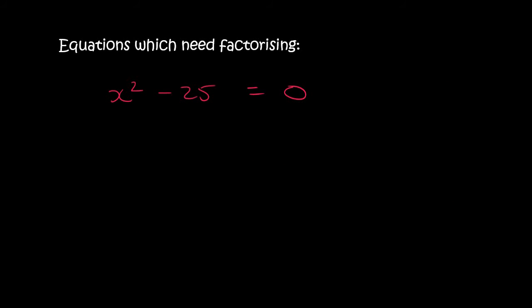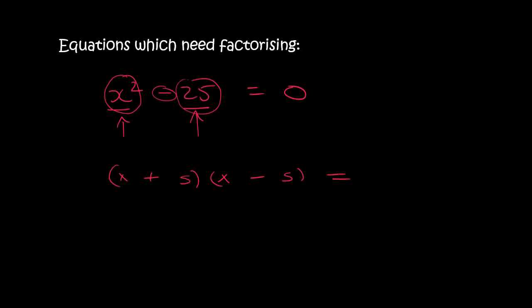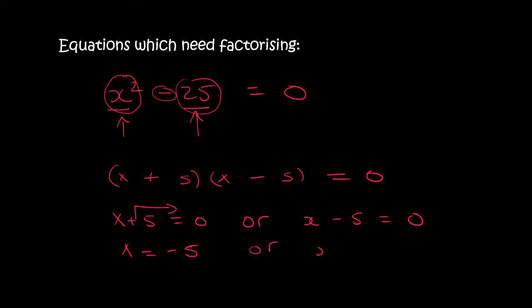Here we have an x squared that's not going to cancel, so we factorize. But this isn't a trinomial. No one said it had to be — this is the difference of squares, where you've got two terms separated with a minus and each one is a perfect square. x times x gives x squared, and 5 times 5 gives 25. So you open up two brackets: x and x, 5 and 5. Remember, the difference of squares has a plus and a minus. So x plus 5 equals 0 or x minus 5 equals 0, giving x equals minus 5 or x equals 5.